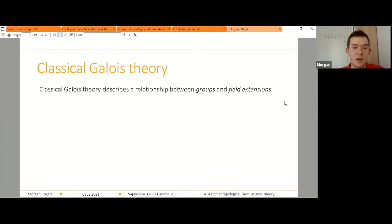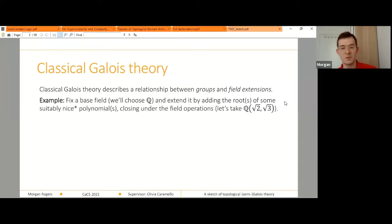Classical Galois theory describes a relationship between groups and field extensions. Now you may also not be that familiar with field extensions, so let me give you an example. We fix a base field, hopefully you're all familiar with the field of the rational numbers, and we extend that field by adding the roots of some polynomials and then close under the field operations.